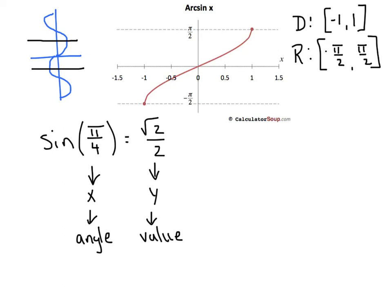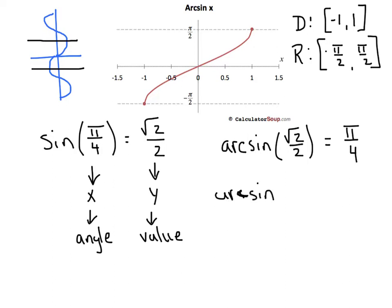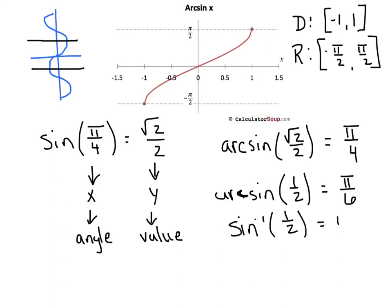When we start talking about inverse sine, those two rascals switch — the x and y values switch. So now I might ask you for the arcsine of √2/2, and your answer is now going to be an angle. The angle is the y value, so you would say an angle of π/4. If I wanted arcsine of 1/2, we're looking for an angle of π/6. I could also write it with the inverse symbol and still get the same answer of π/6.